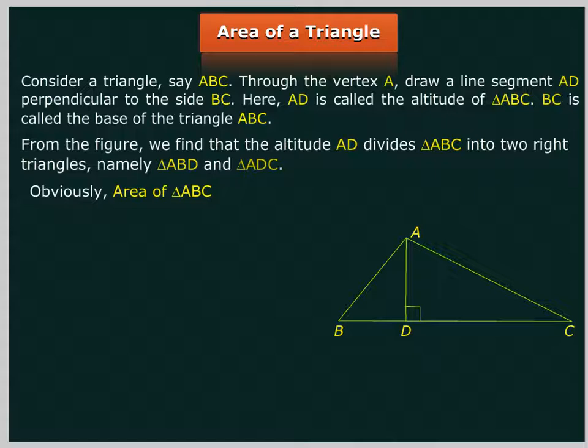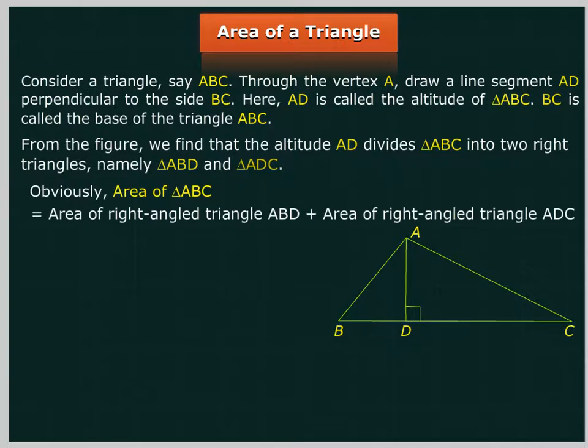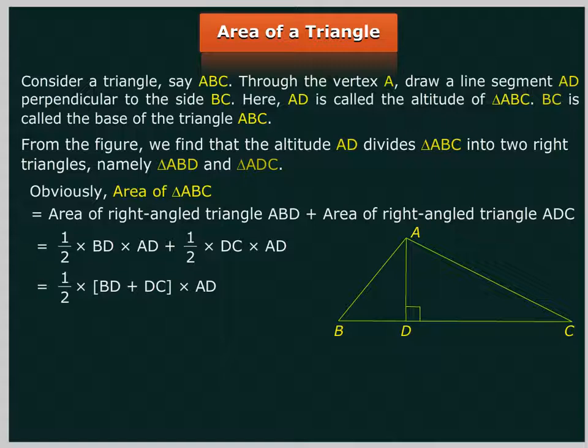Obviously, area of triangle ABC equal to area of right-angled triangle ABD plus area of right-angled triangle ADC, which equals 1/2 × BD × AD plus 1/2 × DC × AD, equal to 1/2 × BC × AD, equal to 1/2 × B × H.